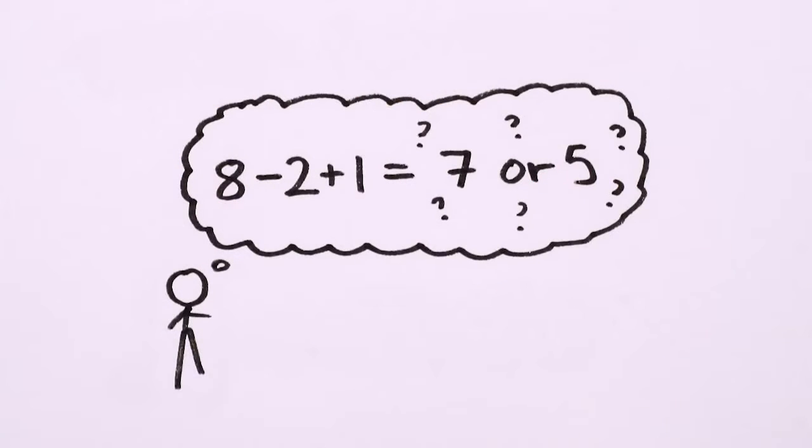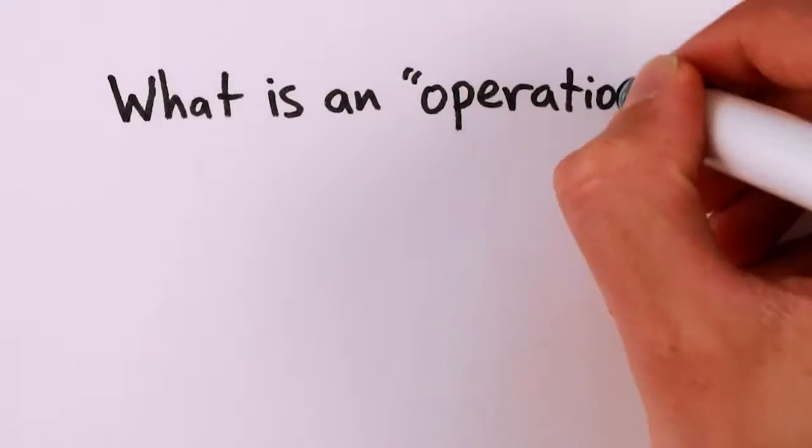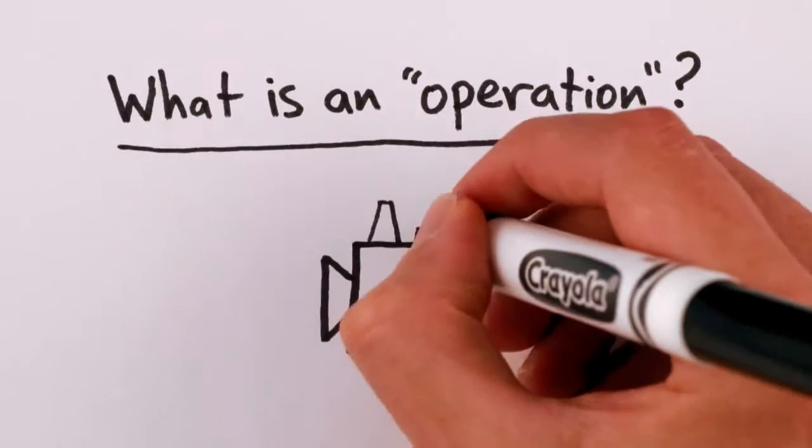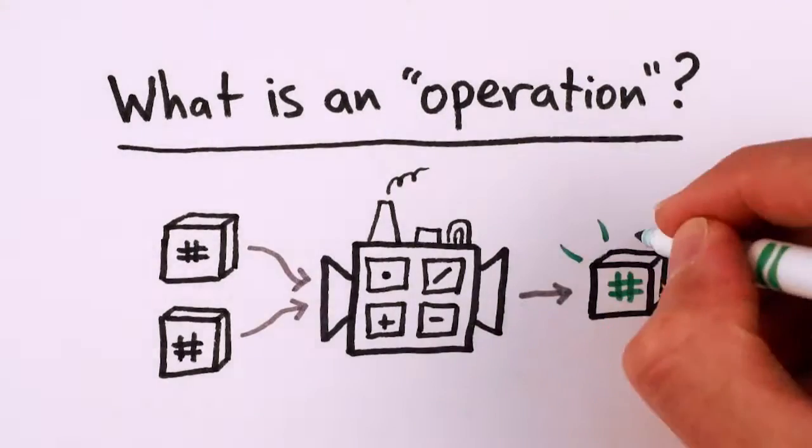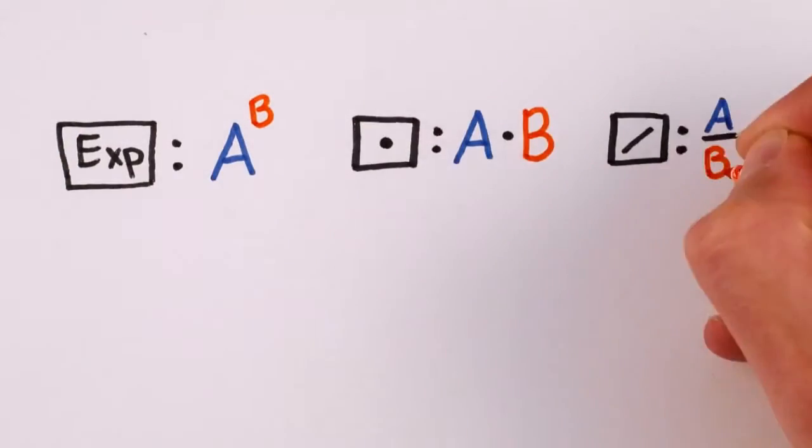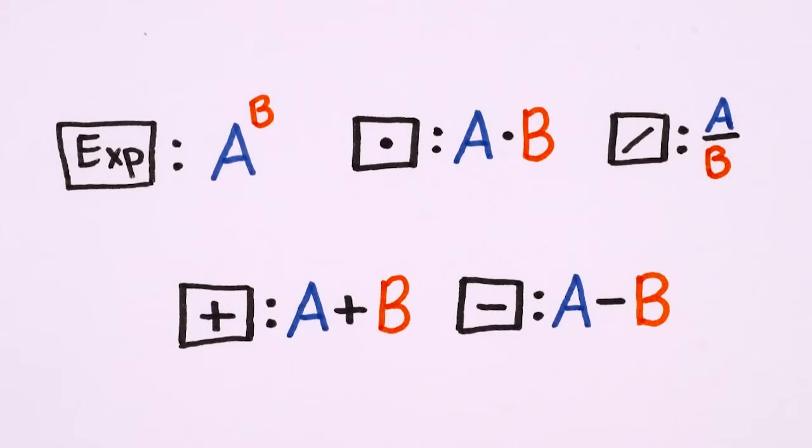But why is this ambiguity even possible? It's because, fundamentally, all of these operations are simply different procedures that start with two numbers and combine them in some way to give you one number. Each operation takes two numbers as input, two and no more.